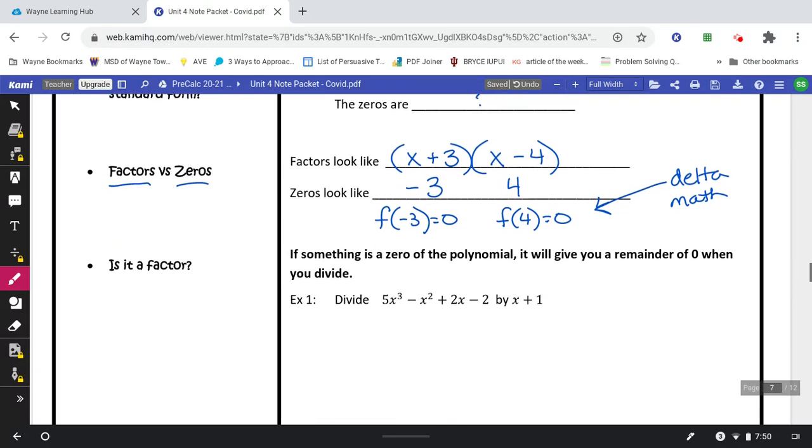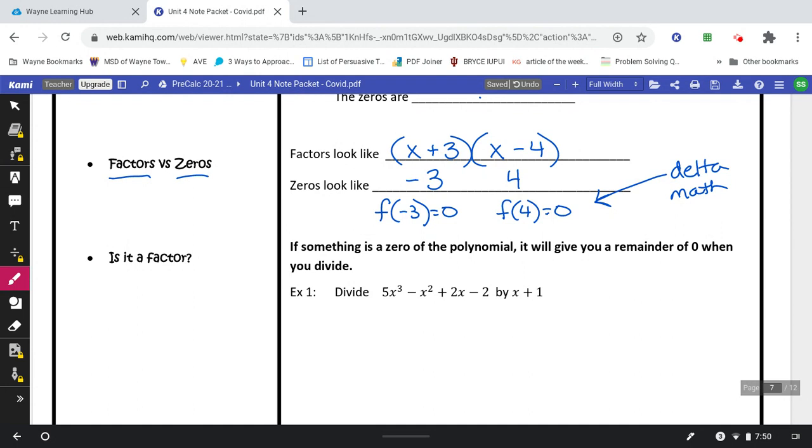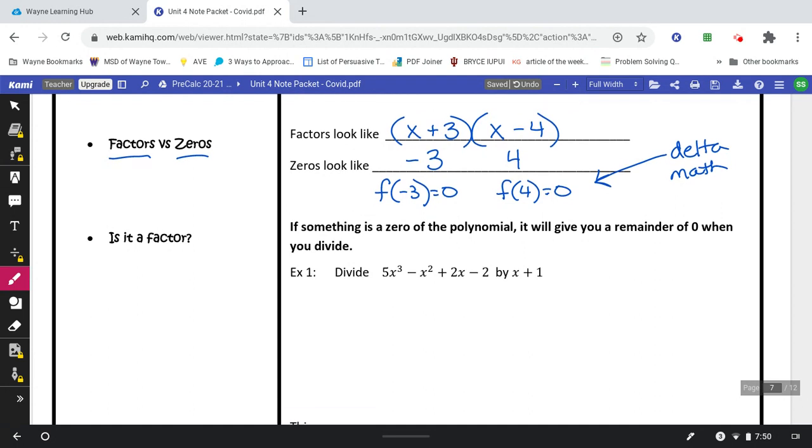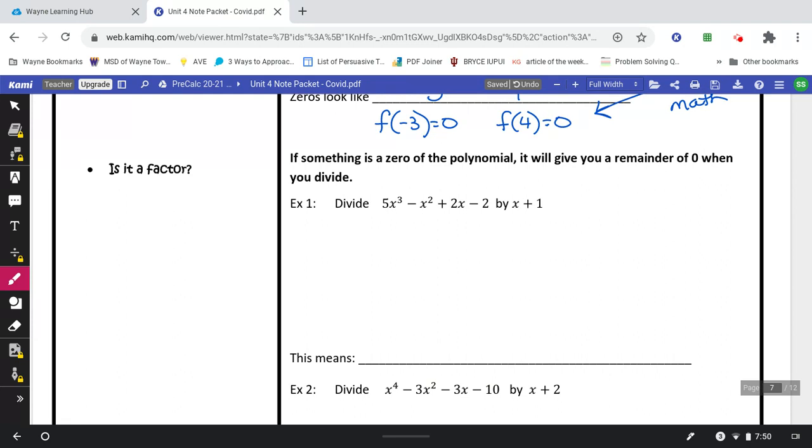So we're going to work on something today called synthetic division. The first thing we're going to do is try to decide whether something is a factor. If something is a zero of the polynomial, it will give you a remainder of zero when you divide. So we're going to divide this out here. What we do with synthetic division is we create this little bar like that, and we're going to take each of the coefficients of the problem.